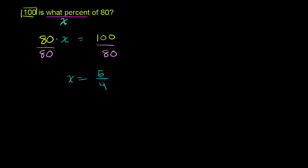So we have to convert this to a percent. And the easiest thing to do is to first convert it into a decimal. So let's do that. 5 over 4 is literally the same thing as 5 divided by 4. So let's figure out what that is.